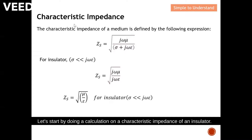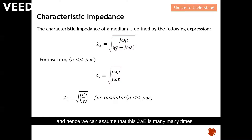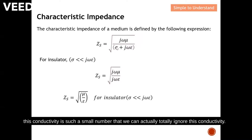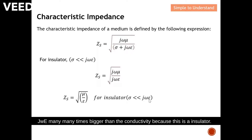Let's start by doing a calculation on the characteristic impedance of an insulator. For an insulator, the conductivity is a very small number, and hence we can assume that j-omega times the dielectric constant is many many times bigger than the conductivity. Because the conductivity is such a small number, we can totally ignore it. In the result, we obtain the characteristic impedance equation where the common factor j and omega cancel out — this gives us the characteristic impedance for an insulator.